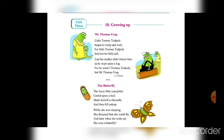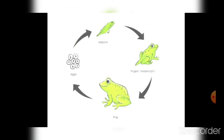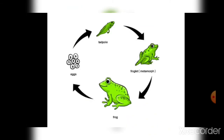You can see the four stages in the life cycle of a frog: eggs, tadpoles, froglet, and the frog.